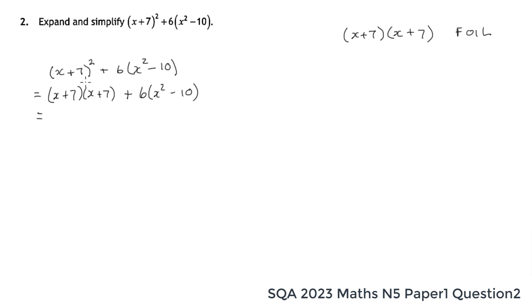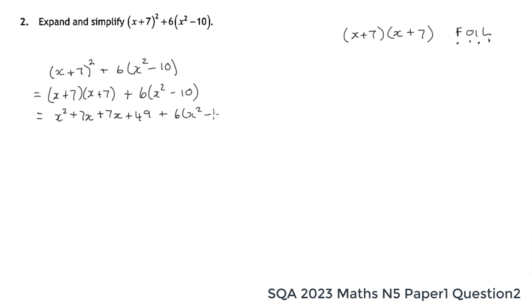Concentrating on the first bracket: first terms — x times x is x squared. Outside two terms — x and seven, both positive, give 7x. Inside two terms — seven and x — give another 7x. Last two terms — seven times seven is 49. Then we have six lots of x squared minus ten. Tidying up: x squared plus 14x — that's 7x plus 7x — plus 49.